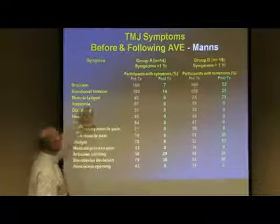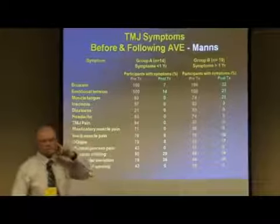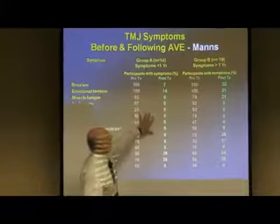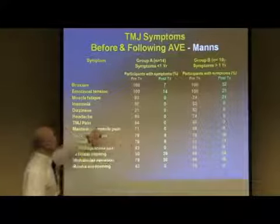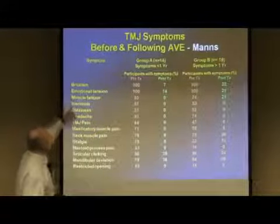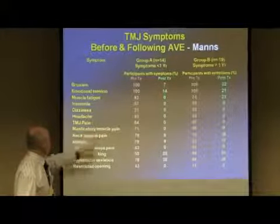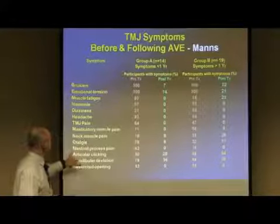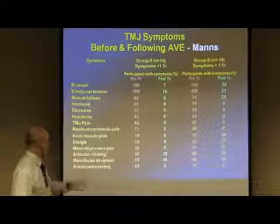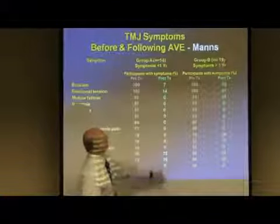Following on that, here's a study done on TMJ — temporal mandibular joint dysfunction, with pain in the joint, clicking, and so on. This group has less than one year of symptoms; this group has more than one year. They were run on entrainment in the alpha range. You can see for bruxism, emotional tension, muscle fatigue, insomnia, dizziness, headache, TMJ pain, masticatory muscle pain, jaw-closing muscles, neck muscle pain, otalgia, mastoid process pain, and articular clicking — look at how quickly all of that went down.